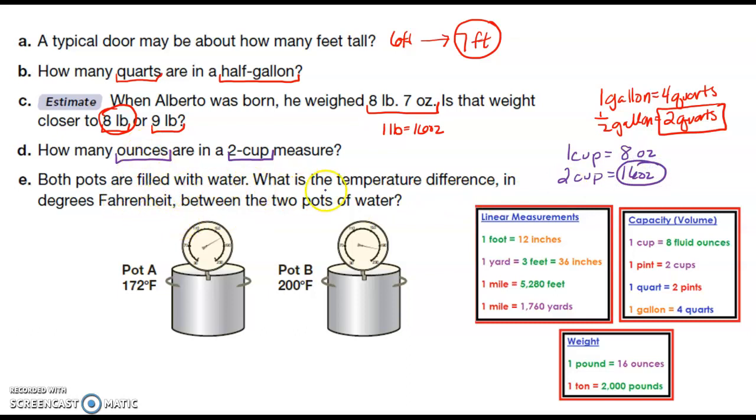Both pots are filled with water. What is the temperature difference in degrees Fahrenheit between the two pots of water? So I have 200 degrees Fahrenheit and 172. The temperature difference in degrees Fahrenheit is 200 minus 172 is 28 degrees Fahrenheit.